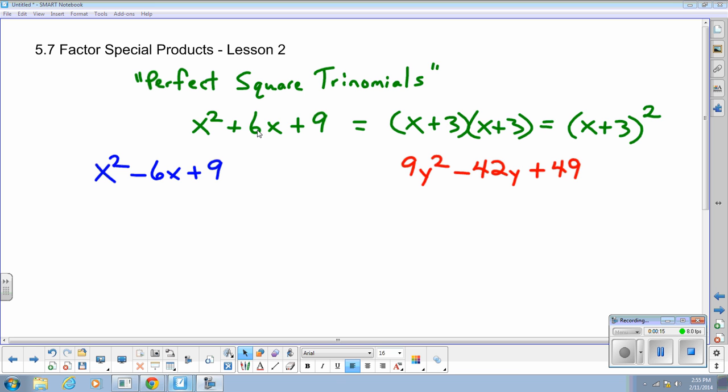And then we discussed that the middle term is actually, if you take the square root of the first term, and this one was x, the square root of the last term, 3, 3 times x is 3x, x double gives you the middle term. That is the pattern of a perfect square trinomial.